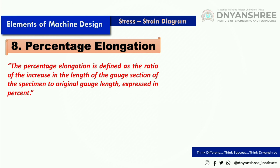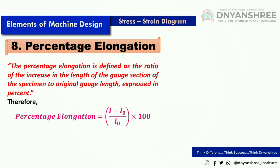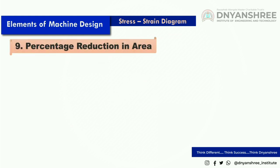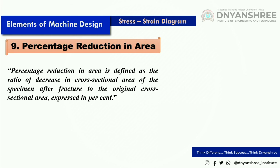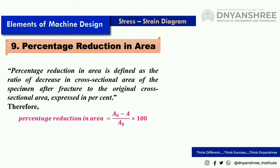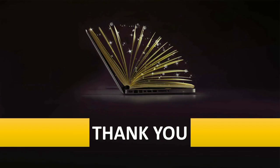Percentage elongation is defined as the ratio of increase in the length of the gauge section of a specimen to the original gauge length, expressed in percent. Therefore, percentage elongation equals (L − L₀) / L₀ × 100. Ductility is measured by percentage elongation. The last point, percentage reduction in area, is defined as the ratio of decrease in cross-sectional area after fracture to the original cross-sectional area expressed in percent: percentage reduction in area equals (A₀ − A) / A₀ × 100.